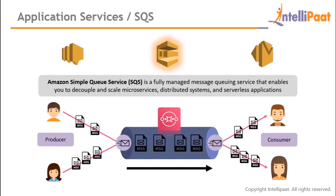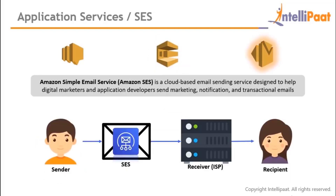Amazon SQS (Simple Queue Service) is similar to SNS but uses a polling model rather than push. SNS uses a push mechanism for time-critical messages; SQS uses polling to exchange messages for distributed applications. Producers send messages and consumers receive them. Using the queue model, only one message can be sent through at a time, and only one message is delivered to one consumer at a time.